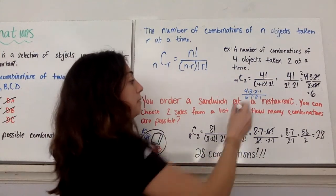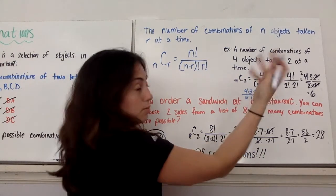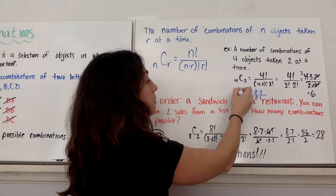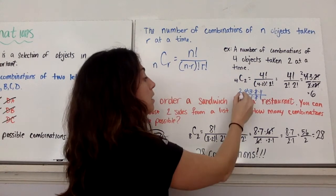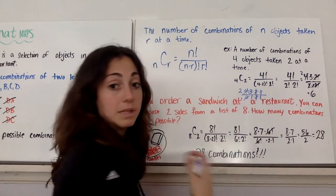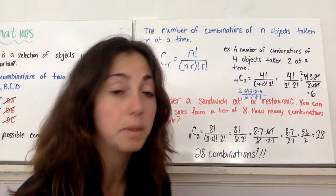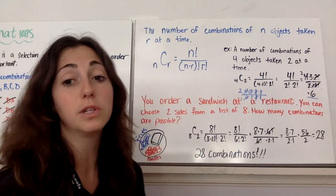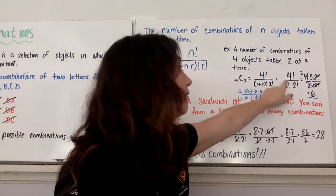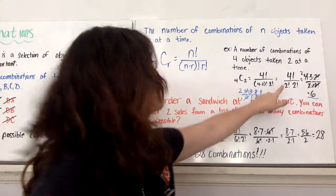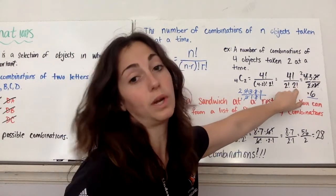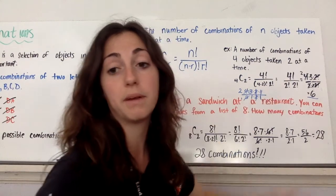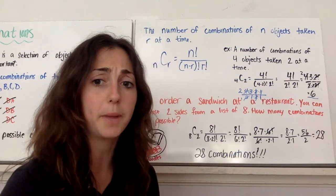I'm going to rewrite this. So I have 4 times 3 times 2 times 1 over 2 times 1 times 2 times 1. The numerator is the 4 factorial. The denominator is each of those factorials. 2 times 1 and 2 times 1. So some things happen. My 2's cancel. My 1's are 1's. My 4 divided by 2 turns into 2 over 1. And then in my denominator, everything's gone. In my numerator, I just have 2 times 3, which is 6. Or you could have multiplied it all the way through. 4 factorial is 24. 2 factorial is 2. 2 factorial is 2. 2 times 2 is 4. 24 divided by 4 is 6. So either way.